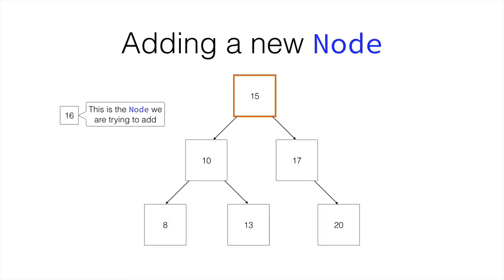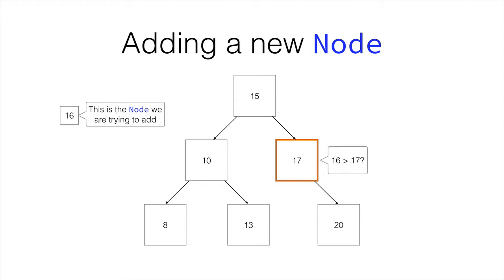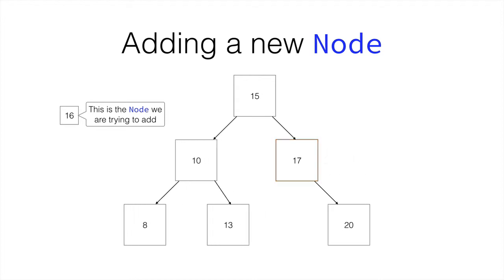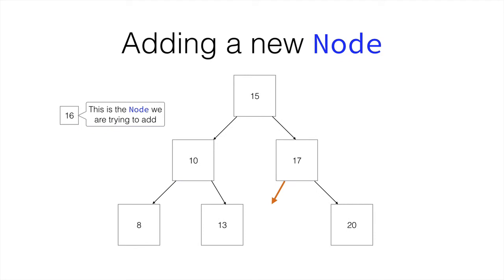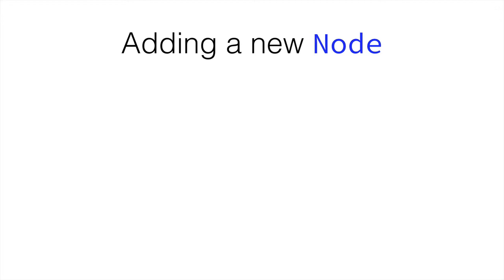Let's go through it graphically once again. 15 is our current node, or marker node. 16 is greater than 15, so we move right, making the current node 17. 16 is not greater than 17, so we move to the left. The left child of 17 is null, and because we've moved left trying to check whether 16 was bigger than 17 or not, we make this null node equal to the new node, which is 16.